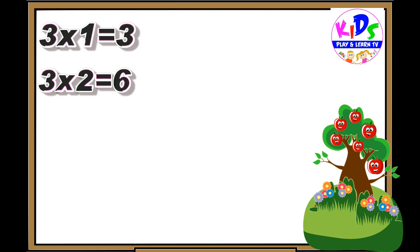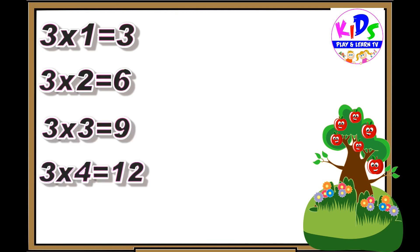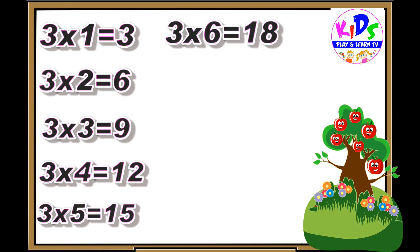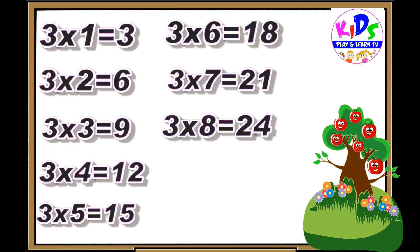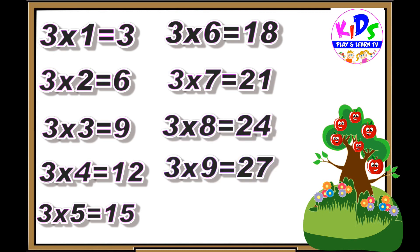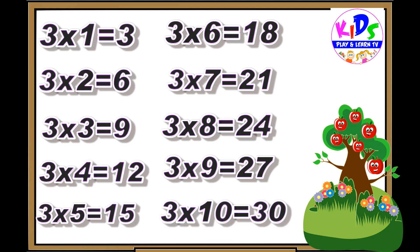Hey kids, let's repeat. Three ones are three, three twos are six, three threes are nine, three fours are twelve, three fives are fifteen, three sixes are eighteen, three sevens are twenty-one, three eights are twenty-four, three nines are twenty-seven.